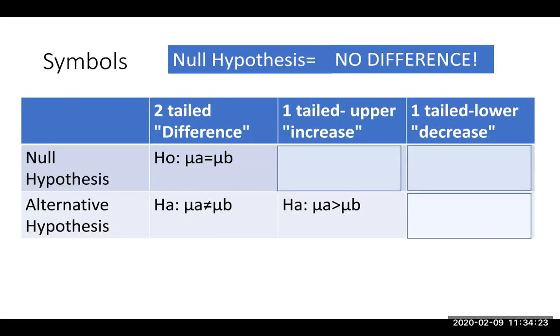So what would be the reverse? We want to do the opposite for the null hypothesis. Now, remember that the null hypothesis is no difference. So here's how we would look for the null hypothesis. The opposite of greater than would be less than,